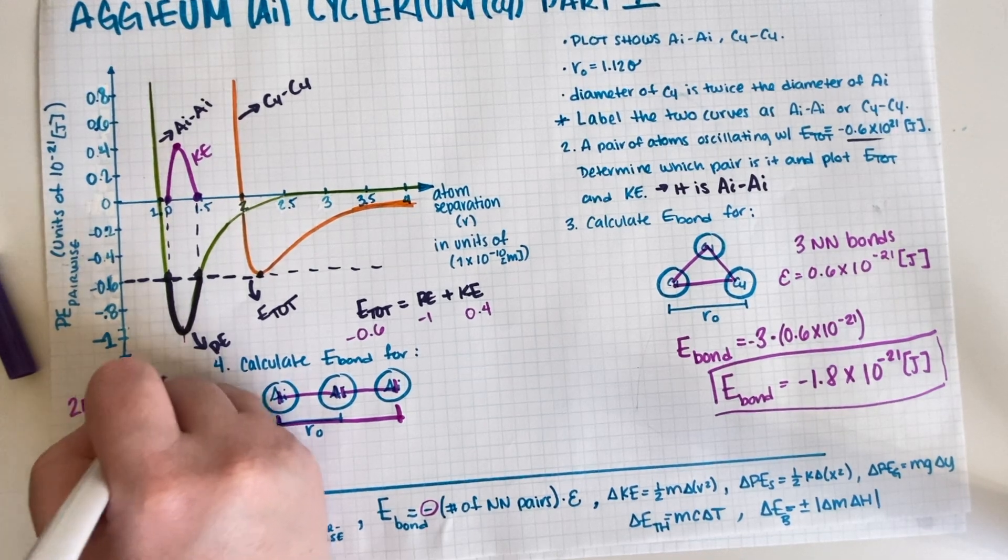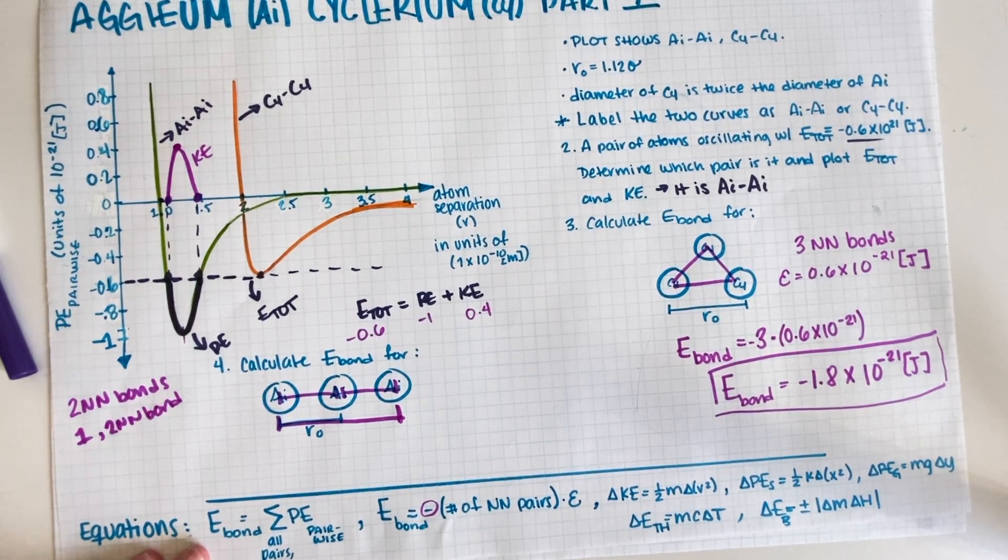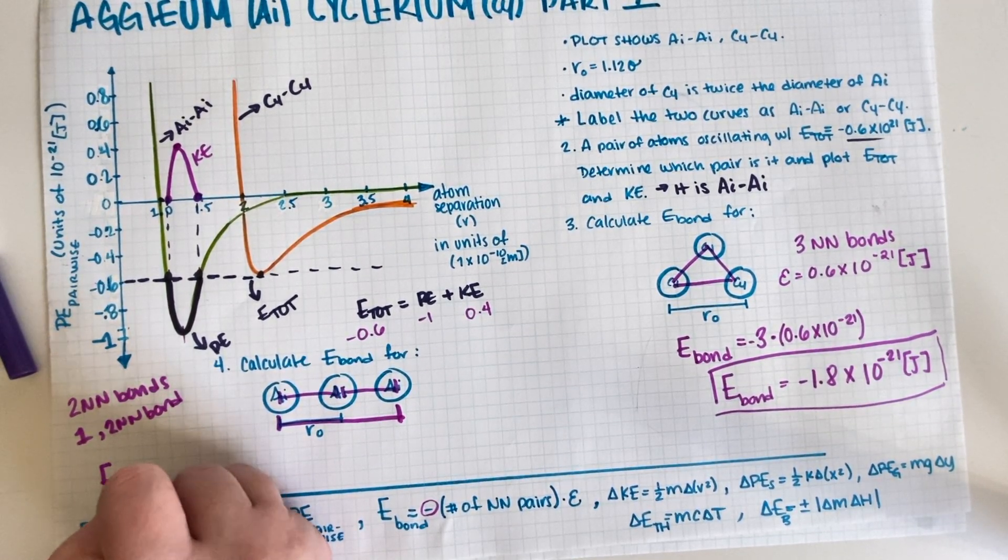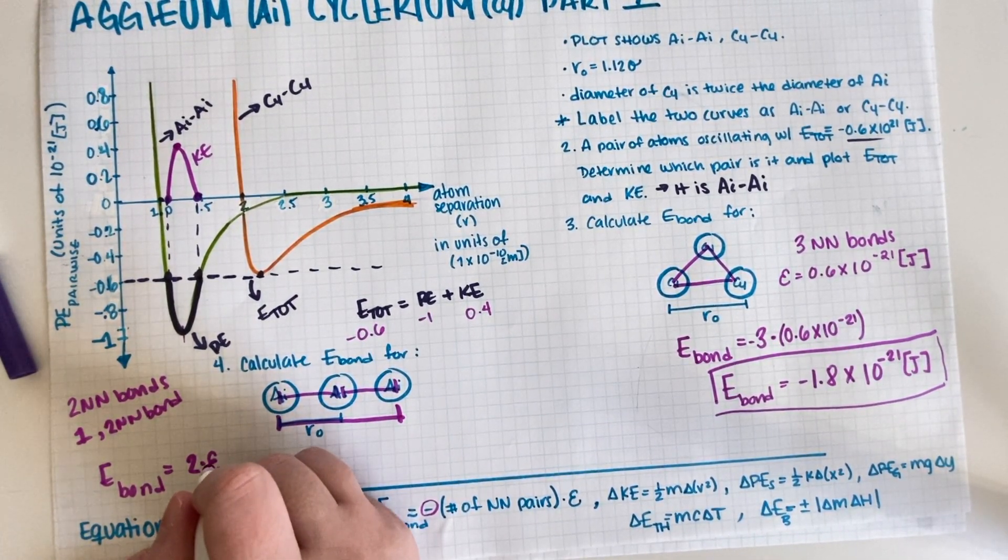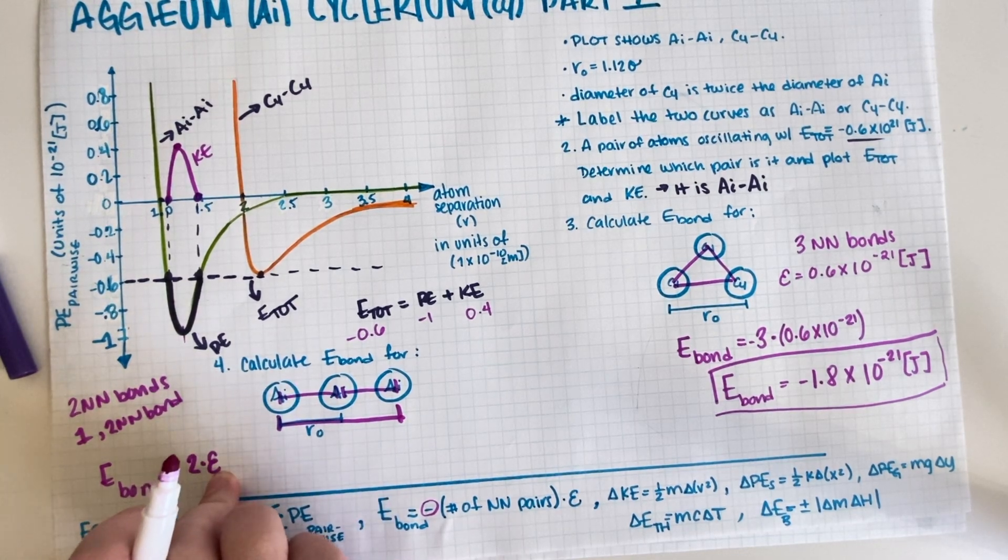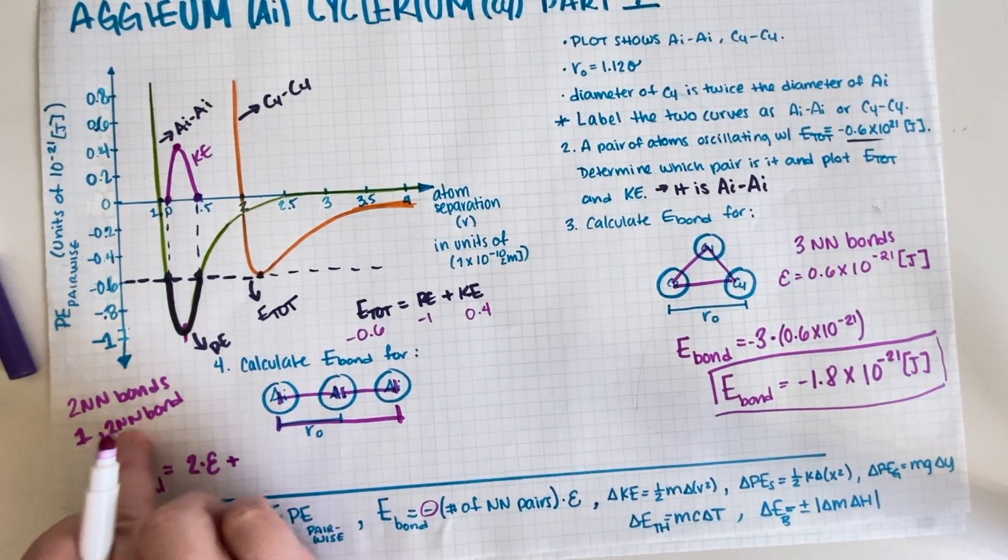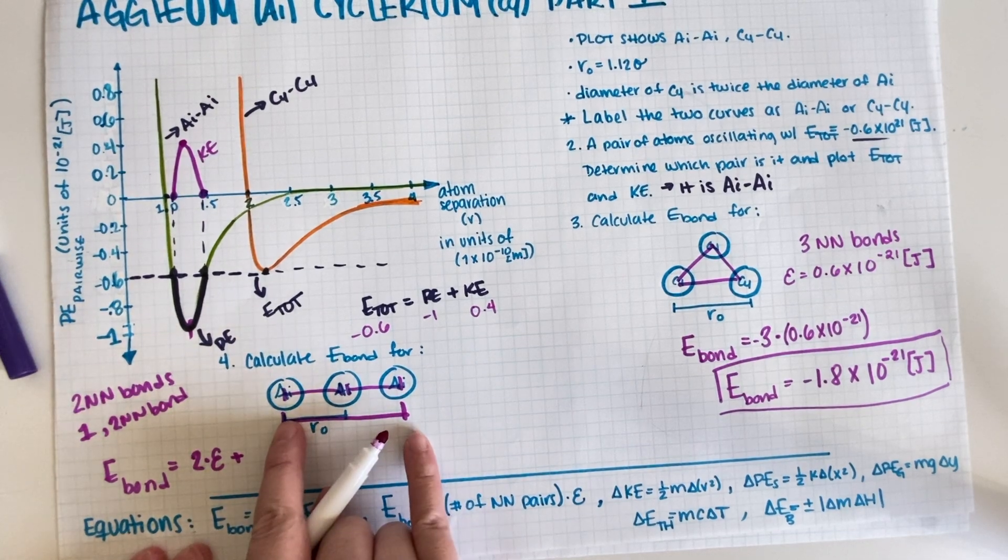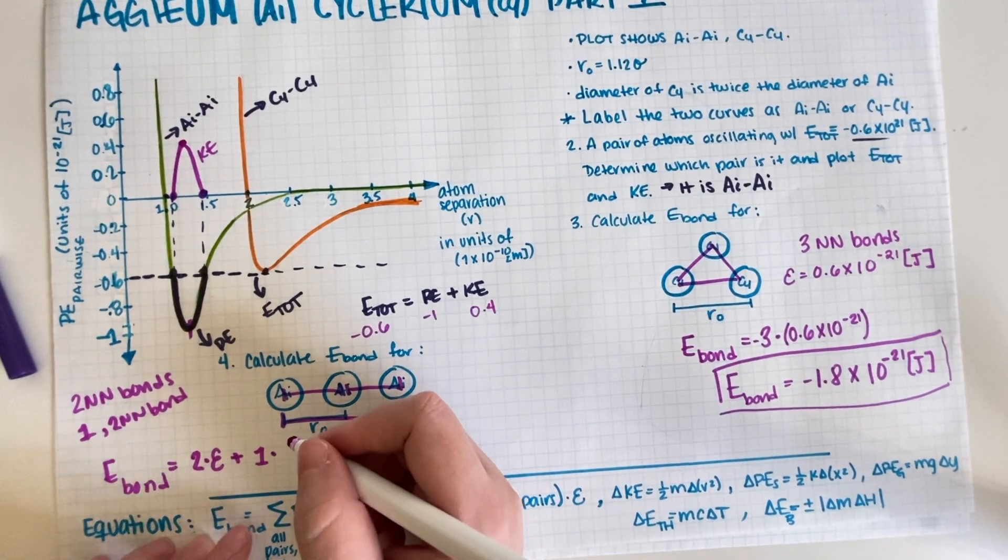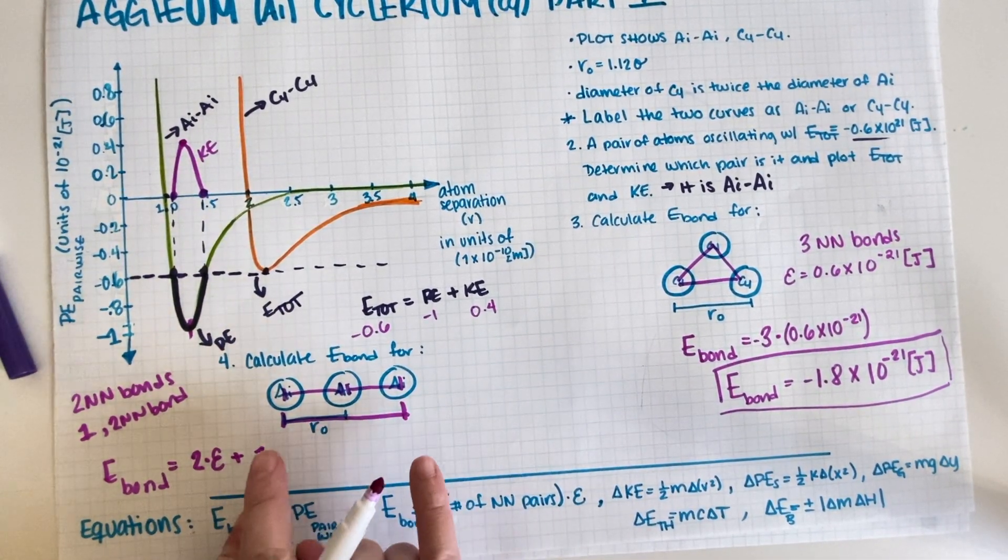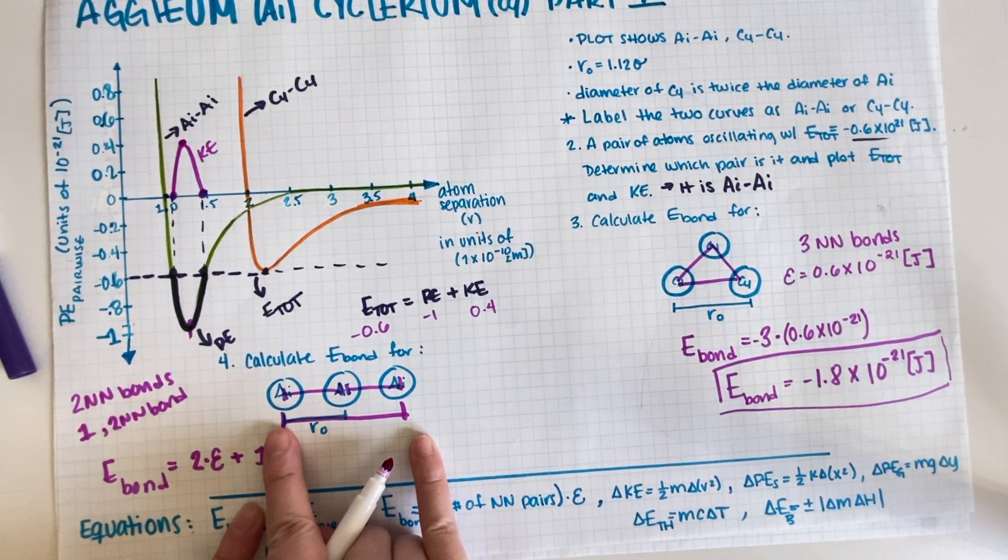So our E_bond is two times epsilon because it's two nearest neighbors, and the nearest neighbor is just this point over here, plus the contribution from the second nearest neighbor which is one because it's just one bond times the energy for the second nearest neighbor. In this case it's just twice... where is it? Twice 1.12, that would be 2.24.